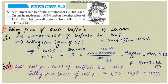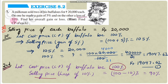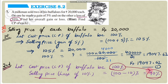For the second buffalo, let cost price = 100%. Since there is a 10% loss, selling price = 100 − 10 = 90%. So the buffalo was purchased at 100% and sold at 90%.